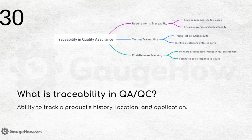What is traceability in QA or QC? It is the ability to track a product's history, location, and application. For example, in testing traceability you can track test execution results and identify tested and untested parts.